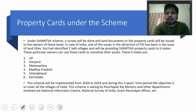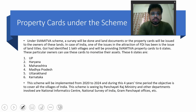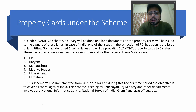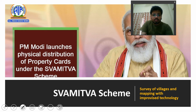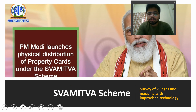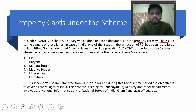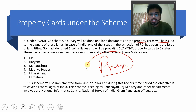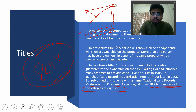Under the SVAMITVA scheme, a survey will be done and land documents or property cards will be issued to the owners of these lands. SVAMITVA stands for Survey of Villages And Mapping with Improvised Technology. This full form itself explains a lot. The scheme will identify lands and give property cards with a conclusive title, not a presentive title.